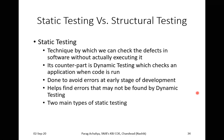There are two main types of static testing. Number one: manual examination — this type of testing is done manually, by checking through questions whether something is right or wrong. Number two: automated analysis using tools — we use some additional tools for automated analysis purposes. These are the two types of static testing.